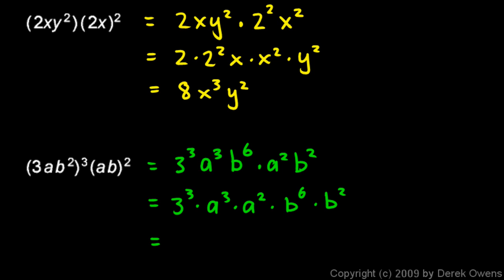The 3 cubed is 27. And then the a cubed times the a squared is a to the fifth. And the b to the sixth times b squared is b to the eighth. And that's it for now.